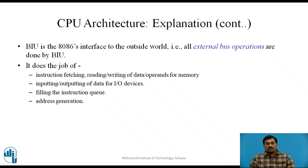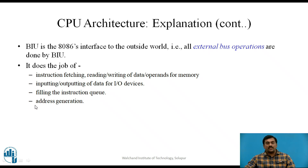The BIU is the 8086's interface to the outside world — all external bus operations are done by the Bus Interface Unit. It handles instruction fetching, reading and writing of data operands for memory, and inputting and outputting of data for IO devices. It fills the 6-byte instruction queue and performs 20-bit address generation to fetch instructions or data.